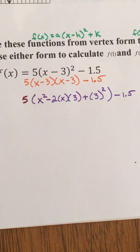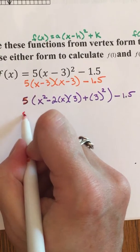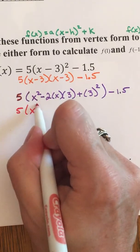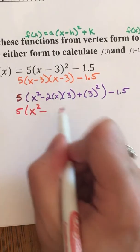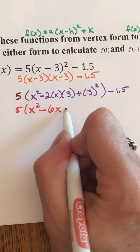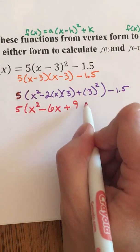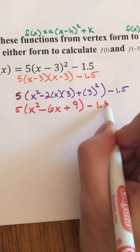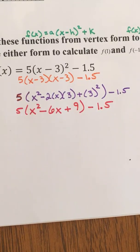Let's change colors. So this becomes 5 times all of this quantity of x squared minus, because I have a minus, 2 times x times 3 plus 3 squared minus 1.5. All right. Let's tidy that up. 5 times the quantity x squared minus 2 times 3 is 6x plus 9 close your parentheses minus 1.5.